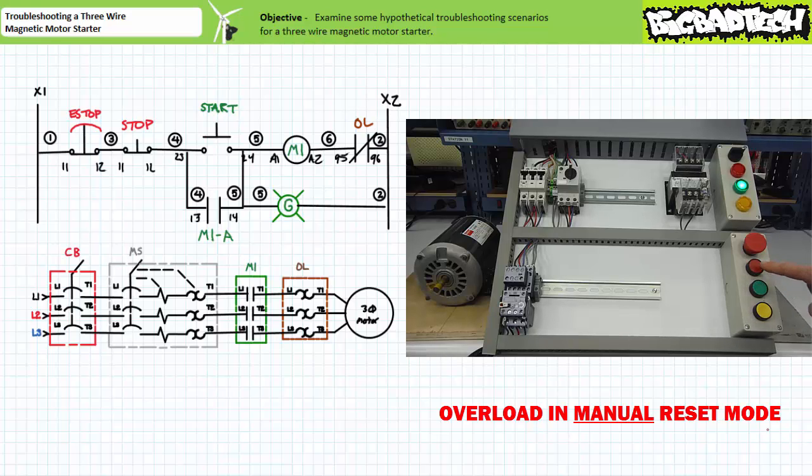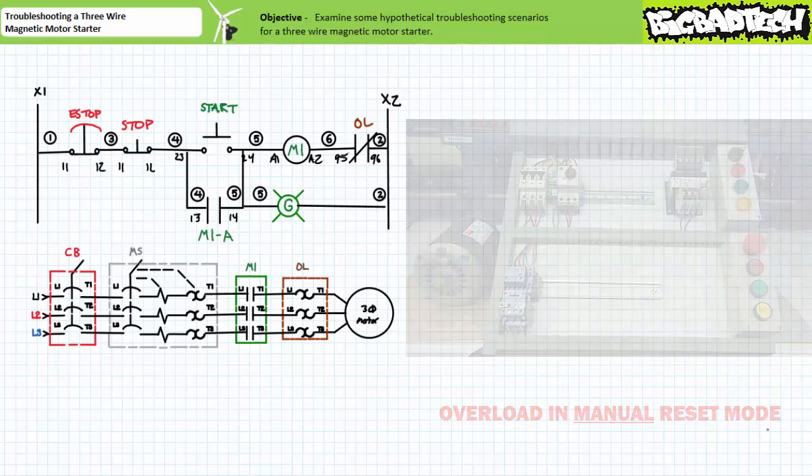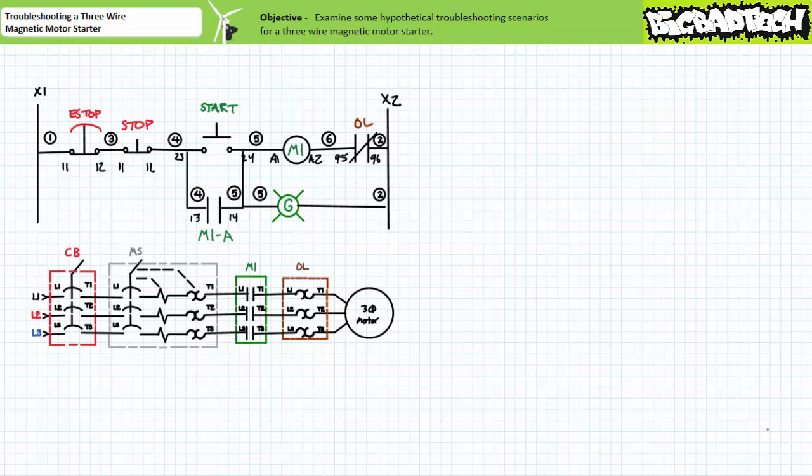Keep in mind, a service call immediately following the removal of the overload-inducing event may be because someone simply forgot to reset the overload in manual mode. Note for both modes, automatic reset and manual reset, the overload should be trip-free, meaning it cannot be held closed while the overload elements are still hot. Let's examine some additional hypothetical troubleshooting scenarios and discuss how this system responds positively or negatively to these situations.